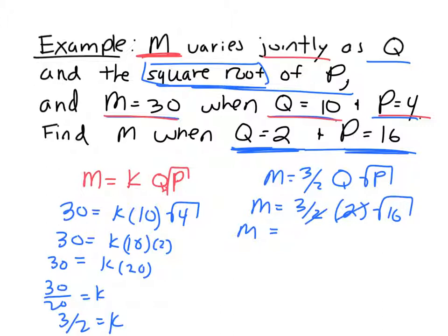So let's find M. Q equals 2 and P equals 16. These two cancel, so we're left with 3. Square root of 16 is 4, so let me write that times 4. And 3 times 4 is 12. So M equals 12 and that's my answer.